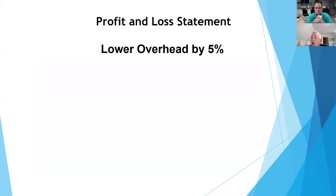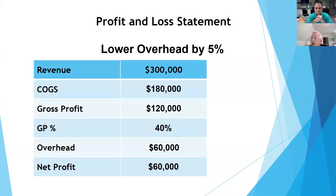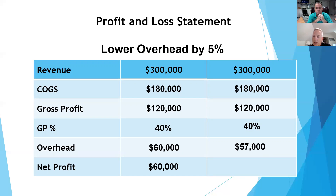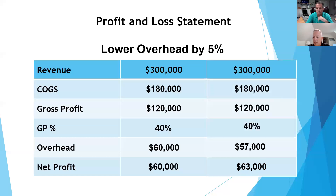Now what if we could just lower the overhead by 5%? That's your fixed costs — rent, utilities, salaries, janitorial costs. Same example: revenue $300,000, cost of goods sold $180,000, gross profit $120,000. Instead of $60,000 in fixed costs, decrease it by 5% to $57,000. That's a $3,000 savings that goes right to the bottom line — $63,000 in profit from a 5% savings in overhead.